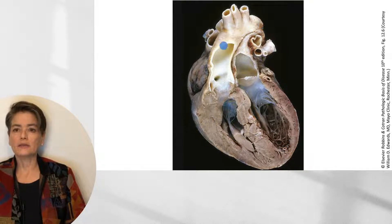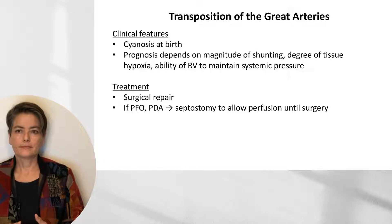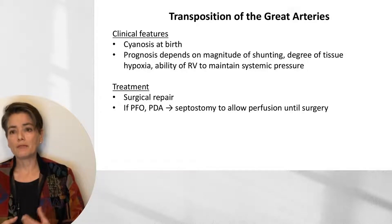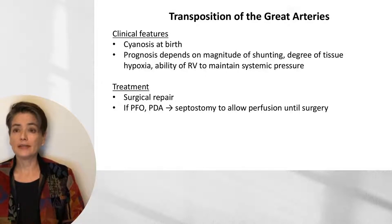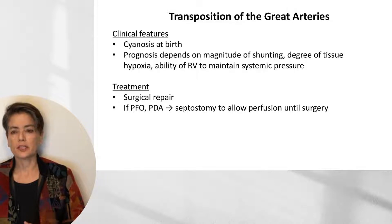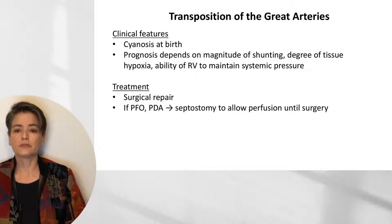The clinical features of transposition of the great arteries include cyanosis at birth. Prognosis depends on the magnitude of shunting — the size of the ventricular septal defect — the degree of tissue hypoxia, and the ability of the right ventricle to maintain systemic pressure, since it may fail as it is not designed to supply the entire body. Treatment is surgical repair, but if the infant is sustained on a patent foramen ovale or patent ductus arteriosus, a septostomy may be performed as an initial step to allow perfusion until definitive surgery.